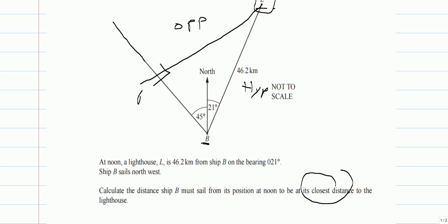What we are looking for is the distance ship B must sail from its position at noon to be at its closest distance to the lighthouse. So this is the distance from here to here that B should travel. This is X, our adjacent side, which is what we are looking for.